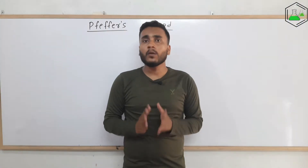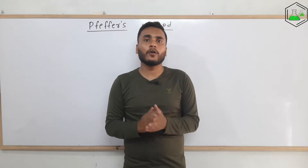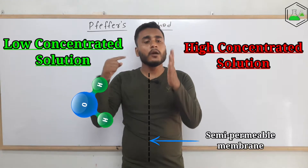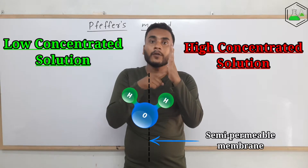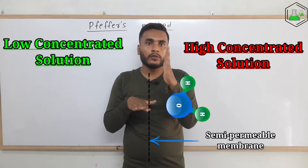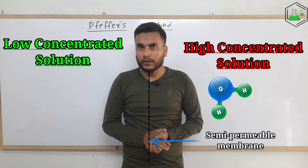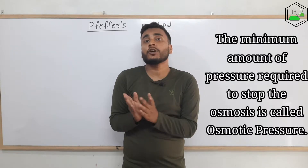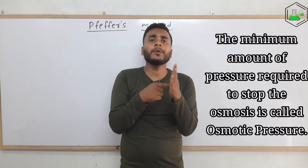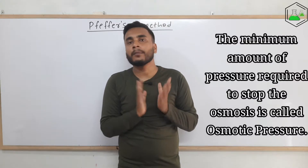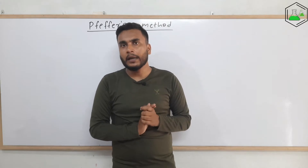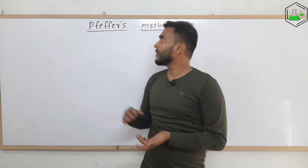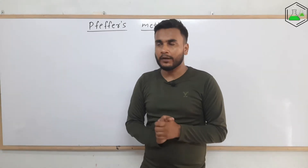First of all, we need to have the concept of osmosis and osmotic pressure. Osmosis is the phenomenon in which the solvent molecules flow through the semi-permeable membrane from a lower concentration solution to a higher concentrated solution. Osmotic pressure is the minimum amount of pressure that is required to stop the osmosis, or the flow of solvent molecules through the semi-permeable membrane.